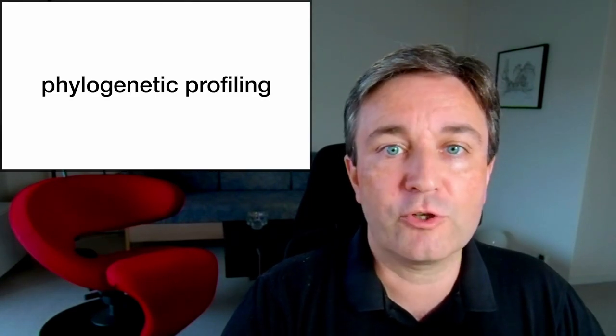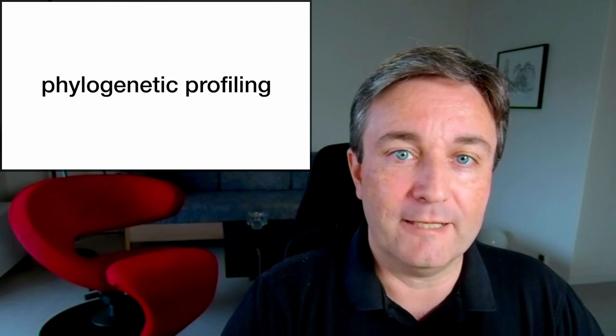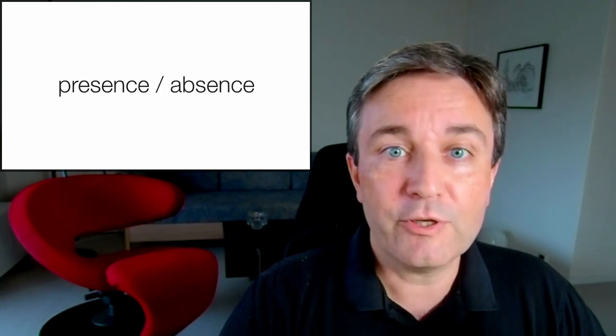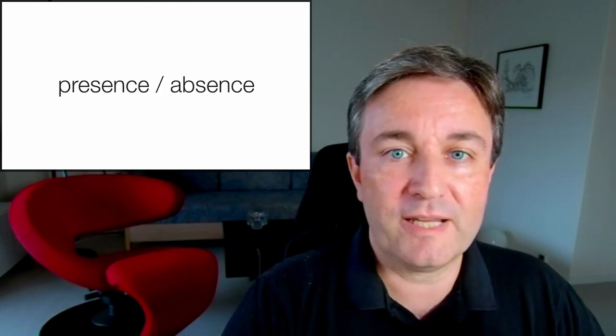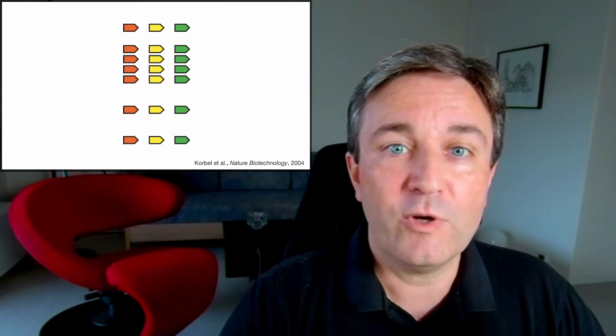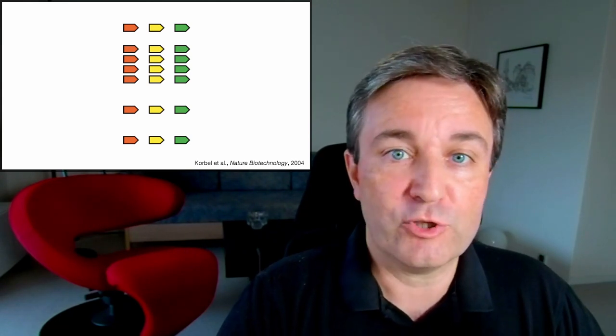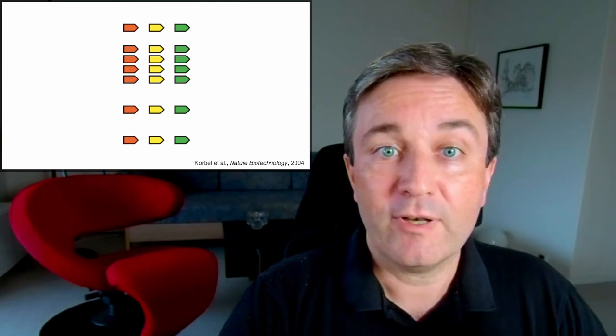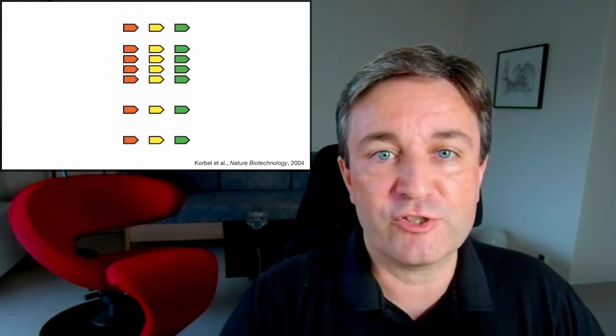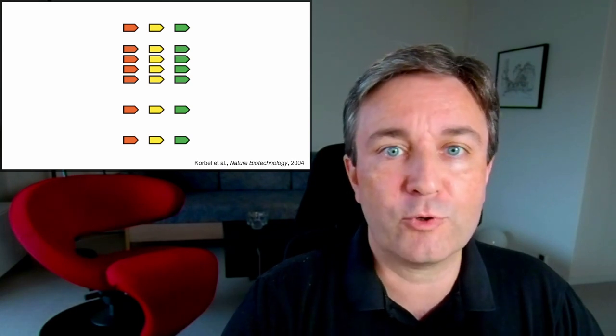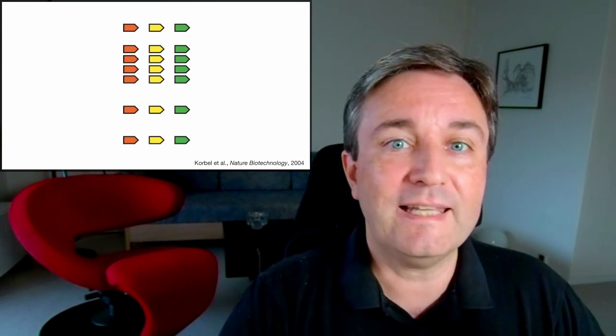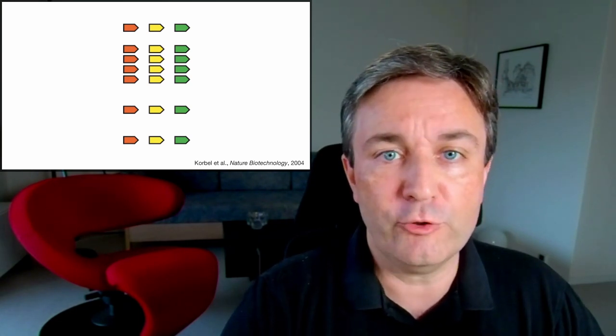The last method I want to cover is phylogenetic profiling. The idea is that you can look at the presence absence patterns of genes like this, where you have the red, the yellow, and the green, and each row corresponds to a different genome. If, like here, they have identical presence absence profiles, or similar presence absence profiles, you can infer that they likely work together in a functional unit.